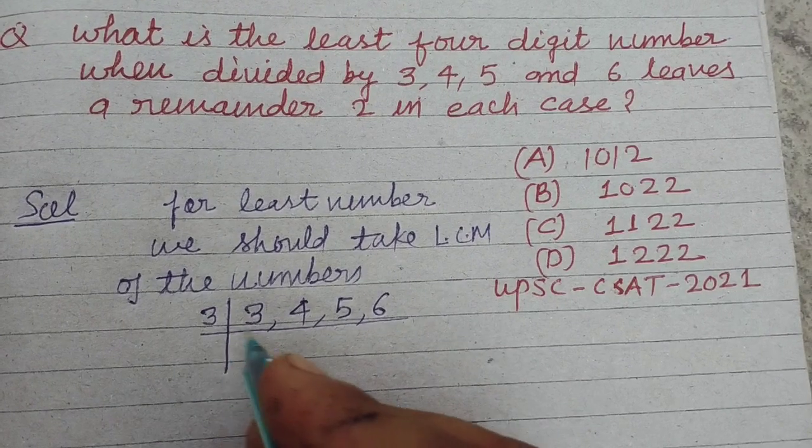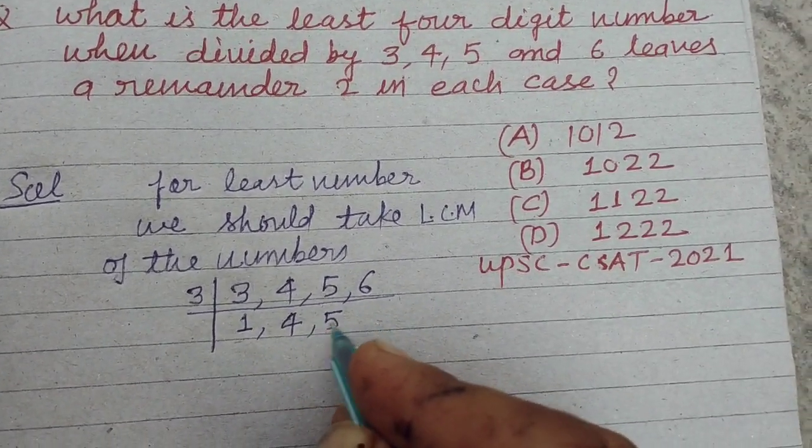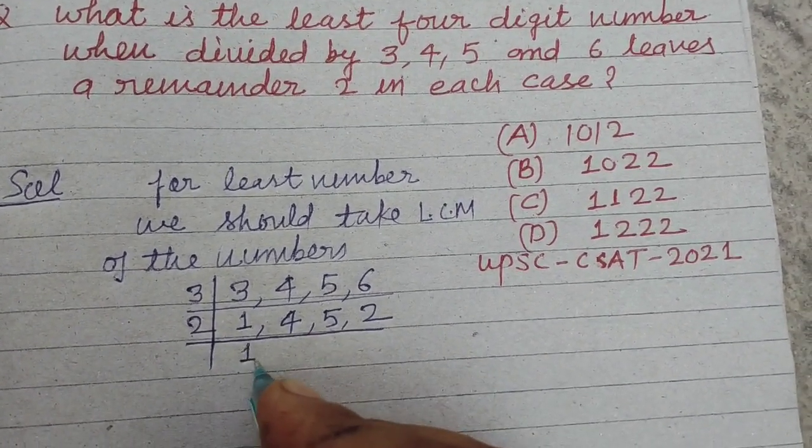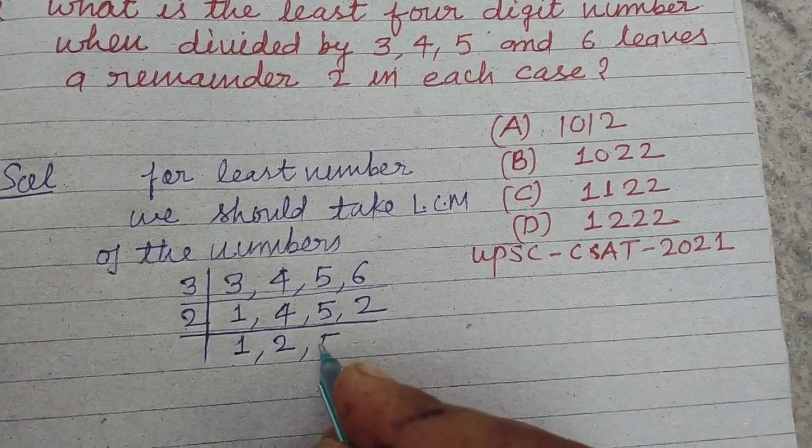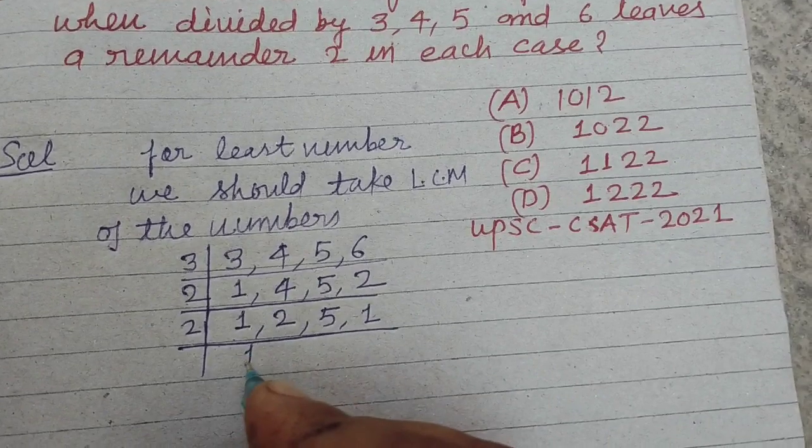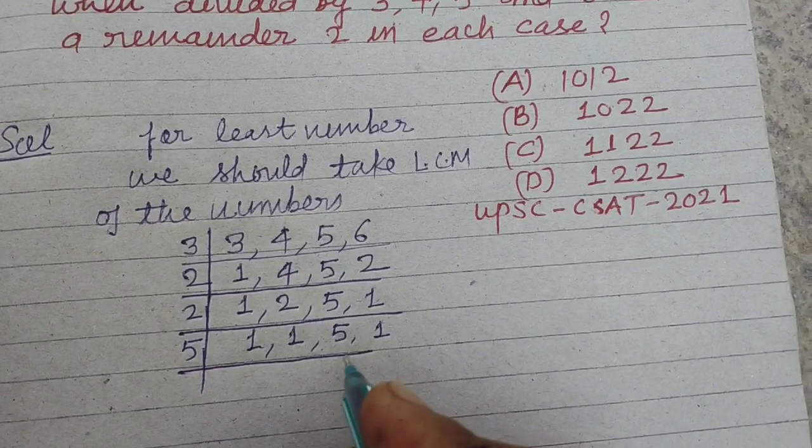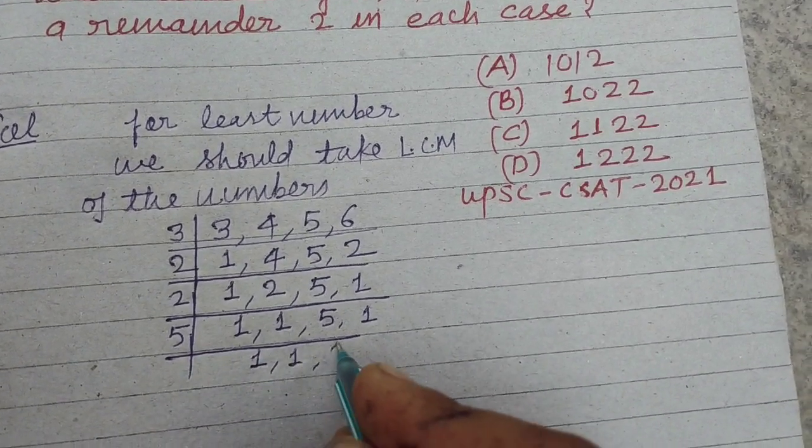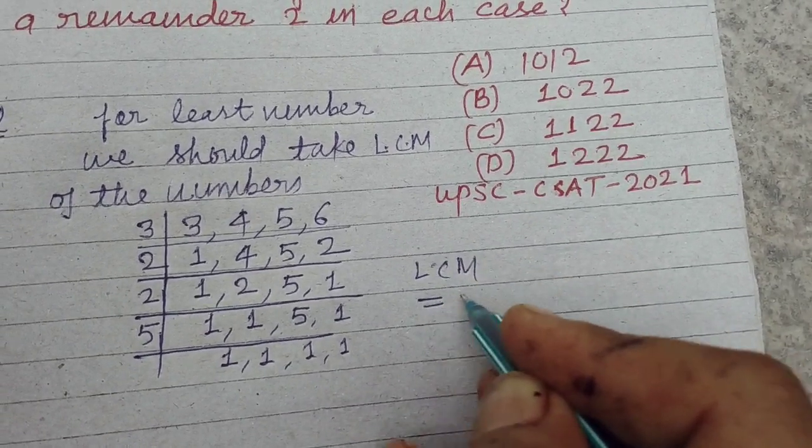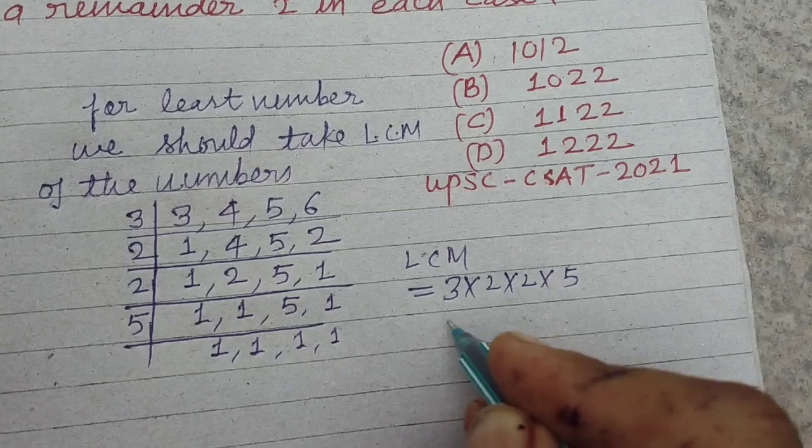When we divide this by 3: 3, 4, 5, 6. Now by 2: 2, 2, 5, 1. Again by 2: 1, 1, 5, 1. Now by 5: 1, 1, 1, 1. Therefore LCM is 3 × 2 × 2 × 5, so 3 × 2 is 6, 6 × 2 is 12, 12 × 5 is 60.